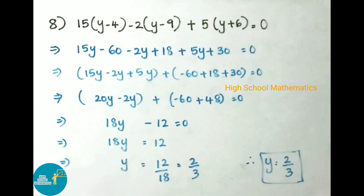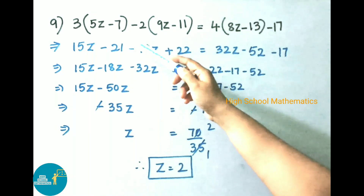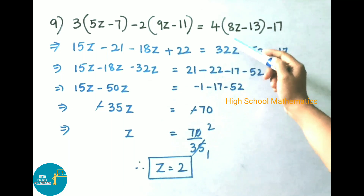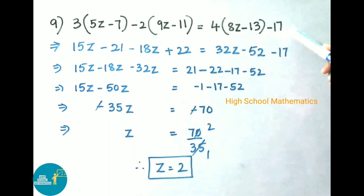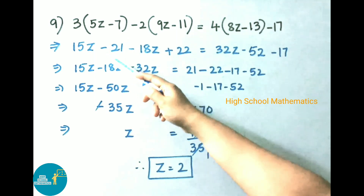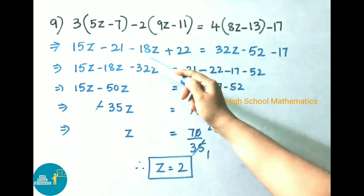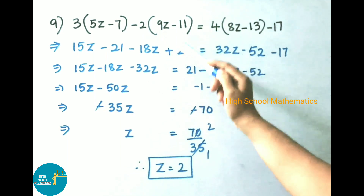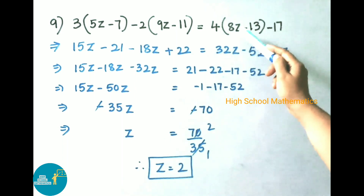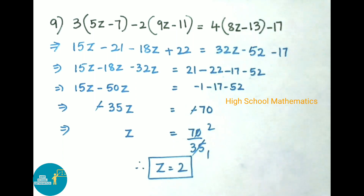Therefore y equals 2 by 3. See now question number 9: 3 into (5z minus 7) minus 2 into (9z minus 11) equals 4 into (8z minus 13) minus 17. That implies 15z minus 21 minus 18z plus 22 equals 32z minus 52 minus 17.